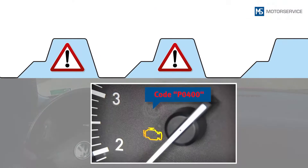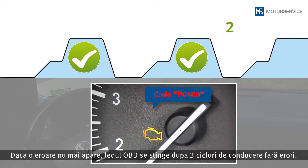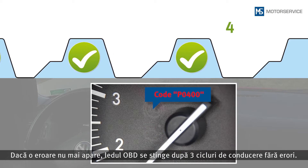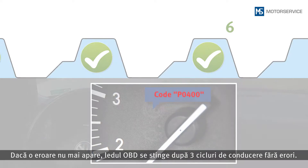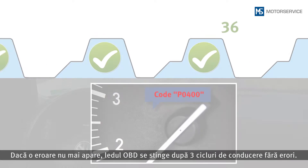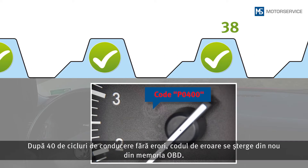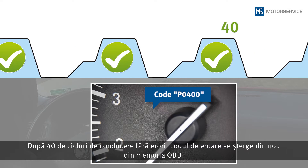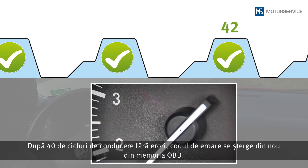If an error does not occur again, the malfunction indicator lamp will go out after three faultless driving cycles. After 40 faultless driving cycles, the DTC is also deleted from the OBD memory.